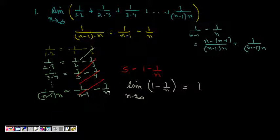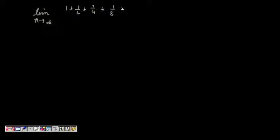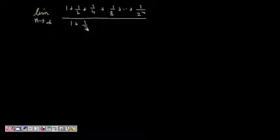This is a type of problem where you first simplify the summation, get one expression for it, then put n tends to infinity. Our next problem is very similar: limit n tends to infinity of [1 + 1/2 + 1/4 + 1/8 + ... + 1/2^n] times [1 + 1/3 + 1/9 + ... + 1/3^n].